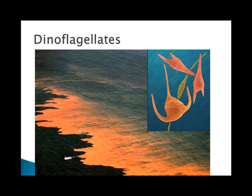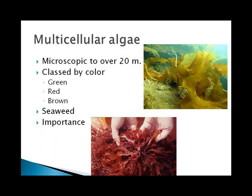Dinoflagellates have two flagella in a groove around their middle. They are photosynthesizers, but when they have a bloom they're called a red tide, which produces toxins that can harm many organisms. Multicellular algae can range from microscopic to 20 meters in length. They're classified by color — green, brown, and red — and are typically what we call seaweed. They're important to humans because we use extracts to make alginates, which are binders in things like ice cream, and also to make agar, which helps identify disease-causing organisms in medicine.